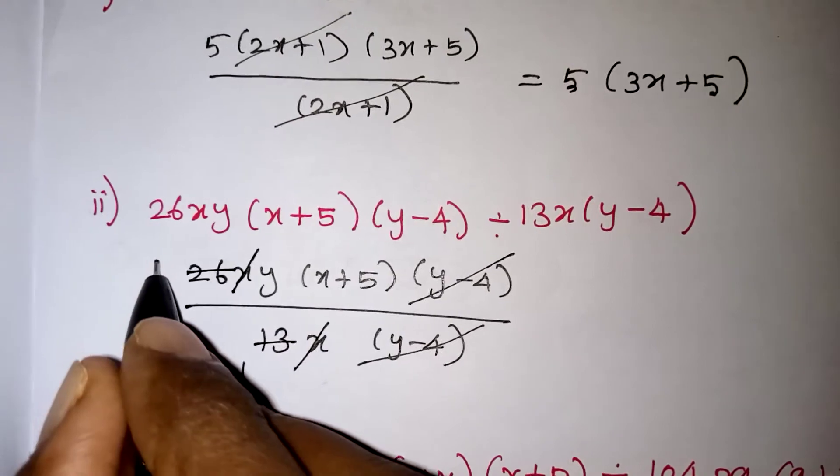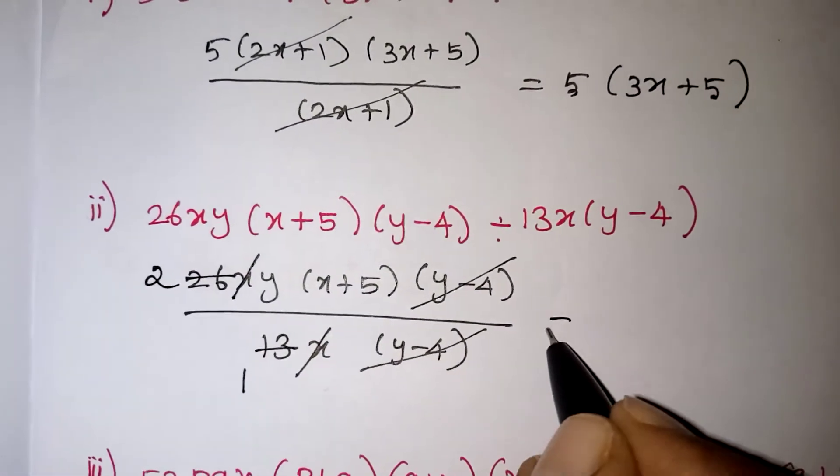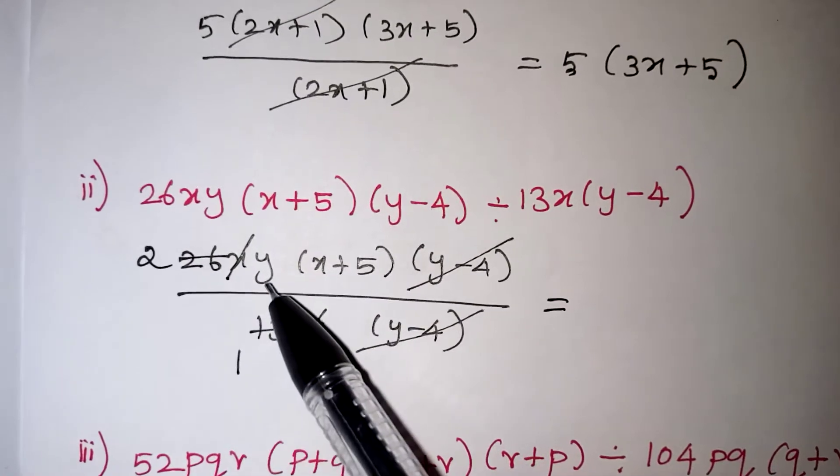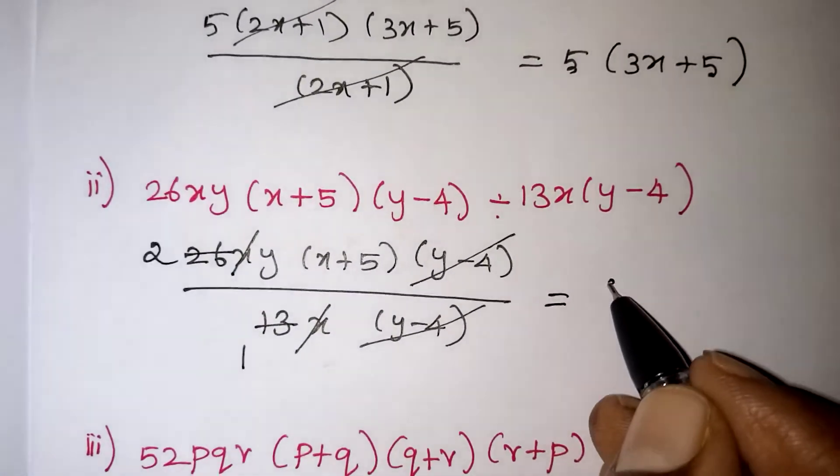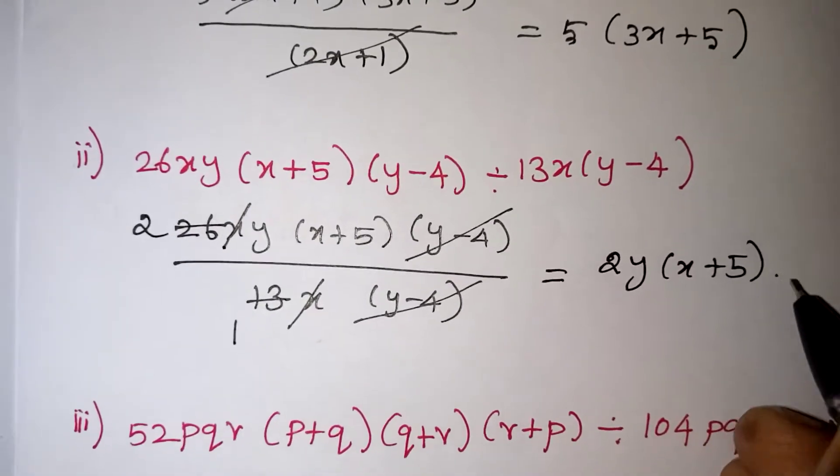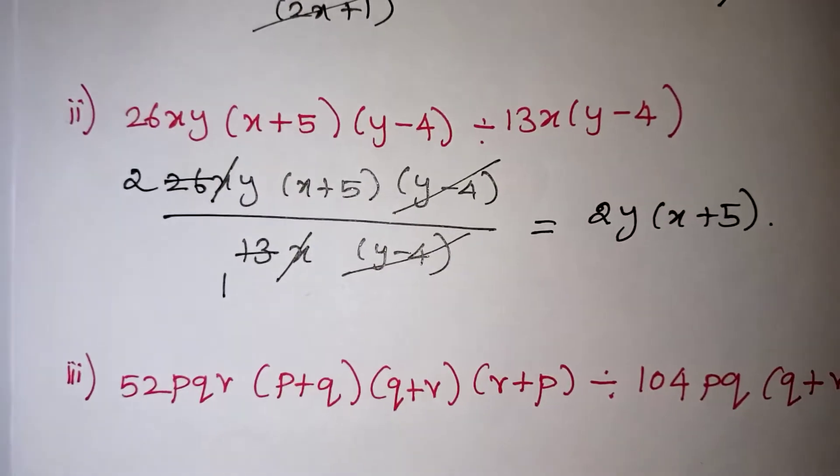13 ones are 13, 13 twos are 26, so after the cancellation the remaining terms in the numerator we have 2y and (x + 5), so 2y(x + 5) is your final answer. We will move on to the third problem now.